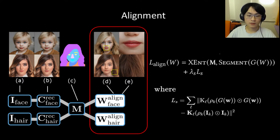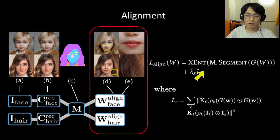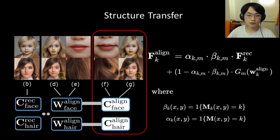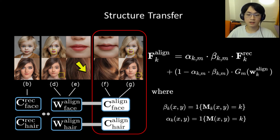The first step in accomplishing this is to find a new W-plus code for the aligned images. The process is to compose a segmentation network with the generator from StyleGAN2, and then use a coarse entropy loss to align the segmentation mask with our target mask. In addition to minimizing the alignment loss, we also have a Style loss which uses Gram matrices to ensure that the average overall appearance within each region is preserved. The overlapping regions are downsampled bicubically to match the dimensions of the F codes, and details from the reconstructed images are alpha blended into the F code.